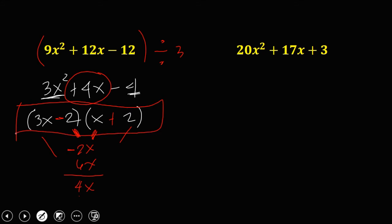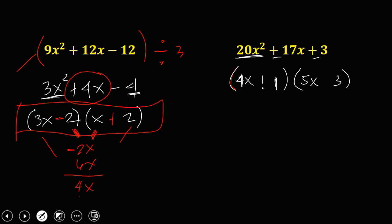For the fourth example: 20x squared plus 17x plus 3. Factors of 20x squared: try 4x times 5x. Factors of 3: try 3 and 1. Since all terms are positive, all signs are positive. Checking: 1 times 5x gives 5x, and 4x times 3 gives 12x, and 5x plus 12x equals 17x — that's our middle term.